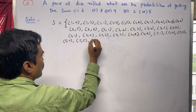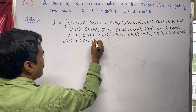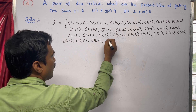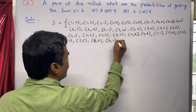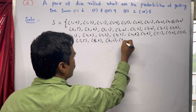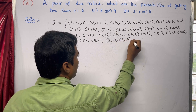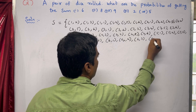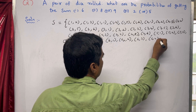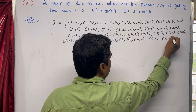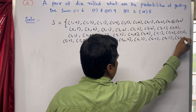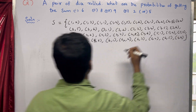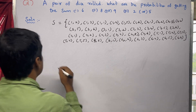Then (5,6), and the last one we start with 6: (6,1), (6,2), (6,3), (6,4), (6,5), (6,6). So totally we get 36 possible outcomes, so n of S is equal to 36.